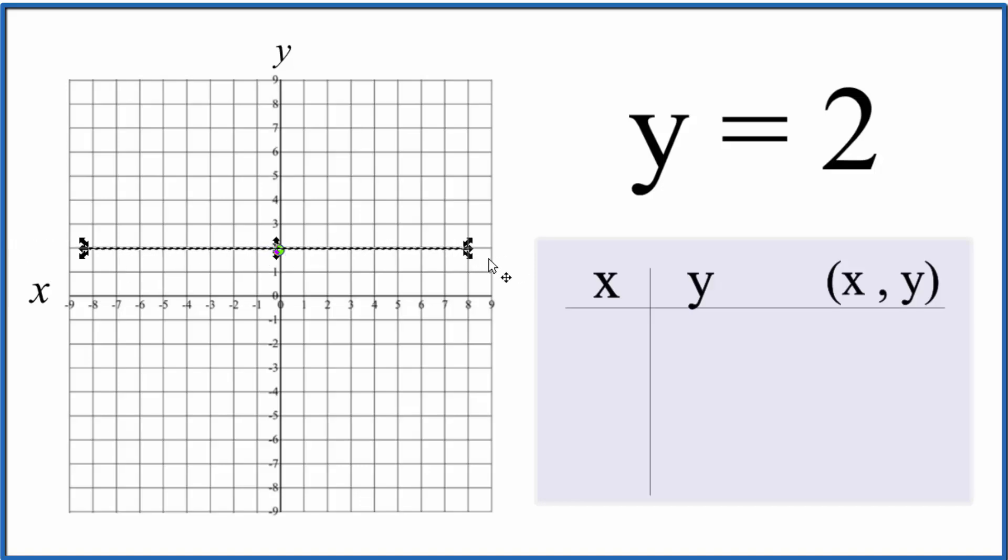this is the graph for y equals 2. Let's put some arrows here to show it goes to infinity. So y is always going to be 2.